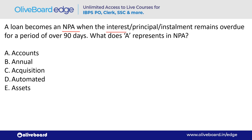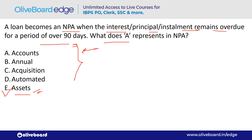A loan becomes an NPA when the interest, principal, or installment remains overdue for a period of over 90 days. What does 'A' represent in NPA? A stands for Assets. The full form is Non-Performing Assets. Everyone should know this full form.